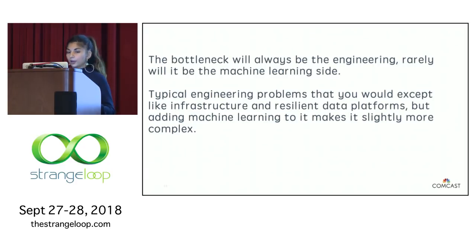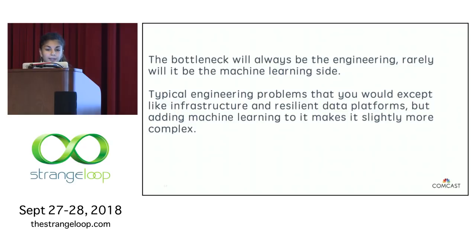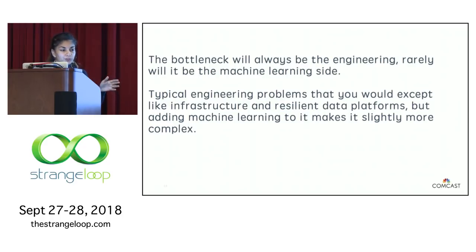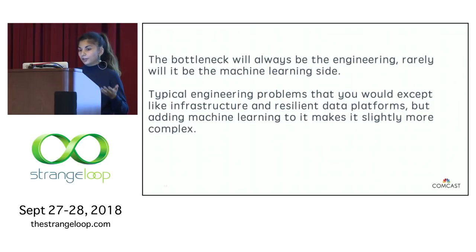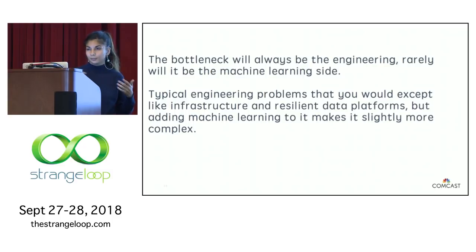From my experience over the past year, and hearing others at Comcast who utilize machine learning, rarely is the bottleneck on the machine learning side. It's usually on the engineering side. When we talk about machine learning, the focus is always on the research, and rarely on how to build a resilient platform to orchestrate it. It's the typical problems we have as software engineers: infrastructure, building resilient data platforms that can scale — nothing new, but adding machine learning makes it somewhat complex.